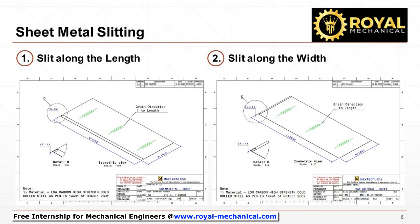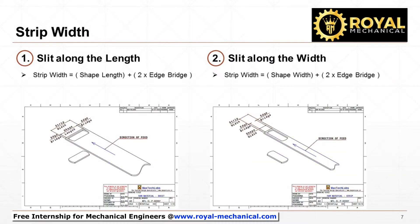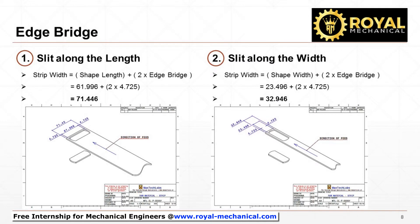Before we get started with the utilization calculations, let's calculate the strip width for both options. Option 1: slit along the length of sheet metal. Option 2: slit along the width of the sheet metal. The strip width equals the shape opening's length or width, depending on orientation, plus 2 times the edge bridge. By substituting the values, the strip width is 71.446 mm for option 1 and 32.946 mm for option 2.